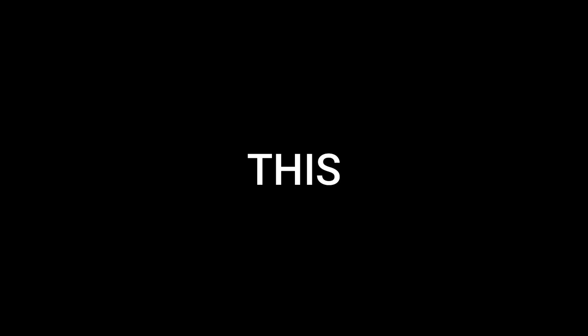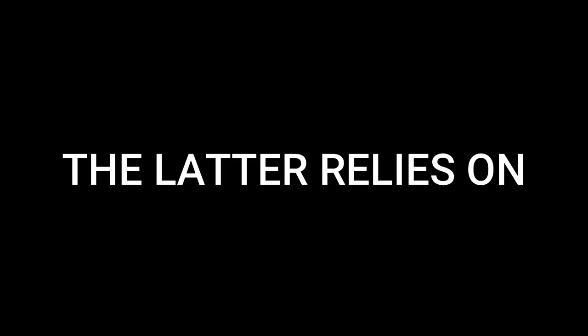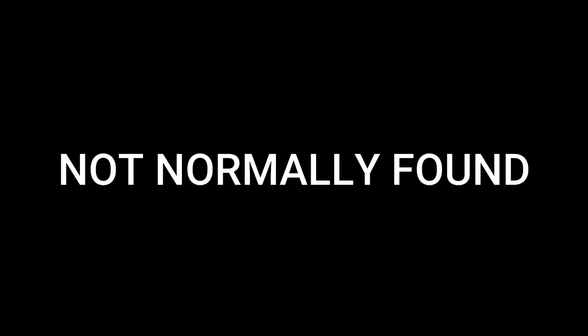These clotting factors must be activated to perform — the names above are their pre-activated forms. This collection makes up the coagulation cascade: the intrinsic or extrinsic pathway. The extrinsic pathway relies on factor three, or tissue factor, not normally found inside our arteries or veins.